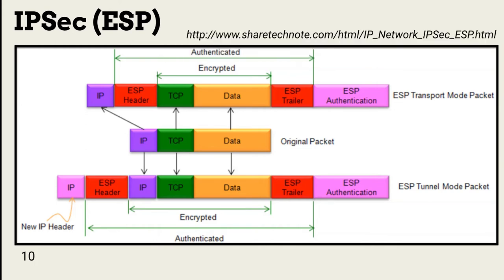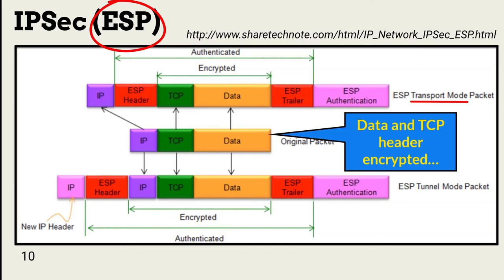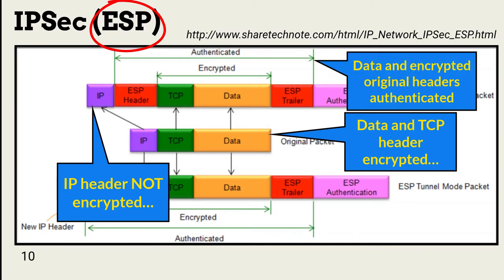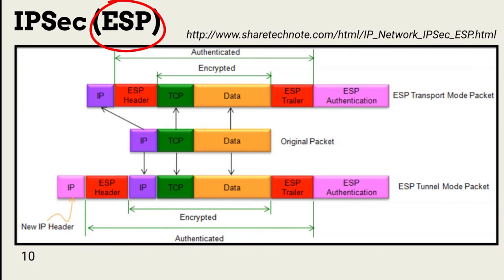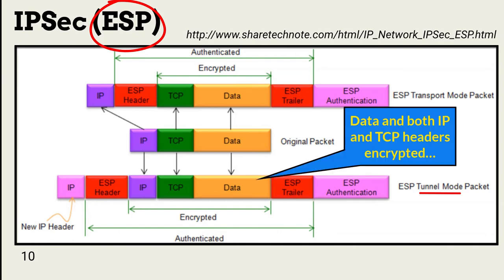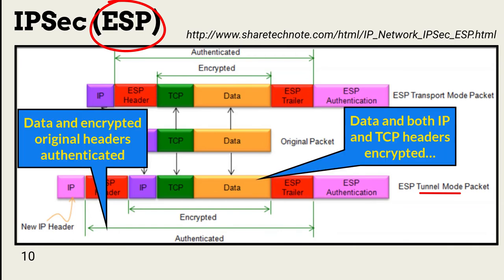Organizations can implement IPsec in one of two ways: Encapsulating Security Protocol (ESP) or Authentication Header (AH). ESP is implemented in Transport or Tunnel mode, and both approaches include authentication. This graphic shows ESP. Transport mode encrypts the data but does not encrypt the original IP addressing information — it protects the payload but still allows a threat actor to understand traffic movement. In Tunnel mode, the original packet is enveloped with ESP data, and the addressing information is also encrypted.